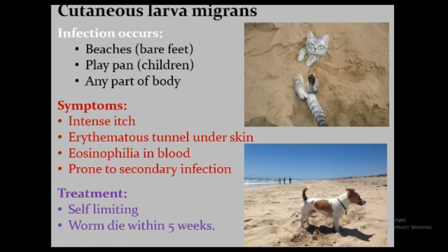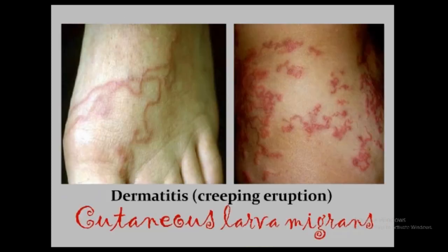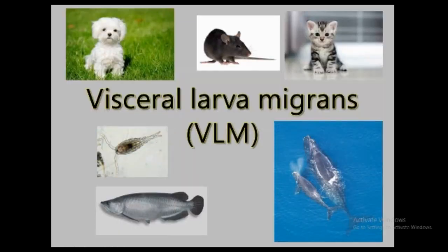Treatment is usually self-limiting because within five weeks the worm typically dies and symptoms remit. This is the typical presentation of creeping eruption or dermatitis, but it will be resolved with time. Now considering visceral larva migrans: animals such as puppies, rats, cats, whales, and marine animals and fish are the reservoir host for visceral larva migrans, which are basically roundworm or Ascaris infections of these animals. They can accidentally infect humans to cause visceral larva migrans, with the main clinical manifestation being granuloma formation due to dead larvae.